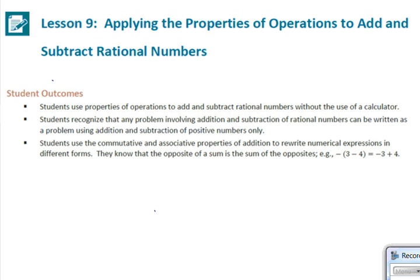Student outcomes for this lesson: Students use properties of operations to add and subtract rational numbers without the use of a calculator. Students recognize that any problem involving addition and subtraction of rational numbers can be written using addition and subtraction of positive numbers only. Students use the commutative and associative properties of addition to rewrite numerical expressions in different forms. They know that the opposite of a sum is the sum of the opposites — for example, subtracting the quantity 3 minus 4 is equivalent to negative 3 plus 4.